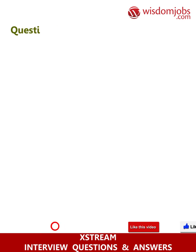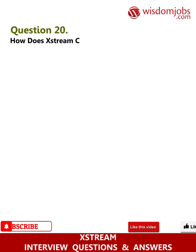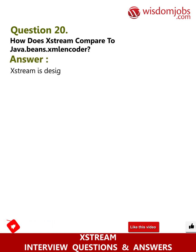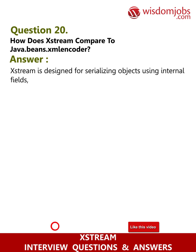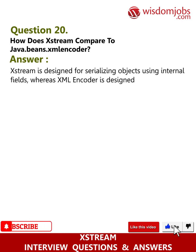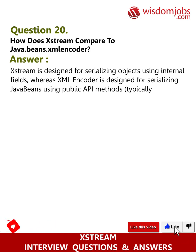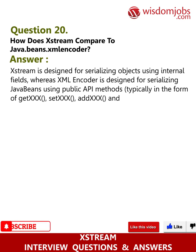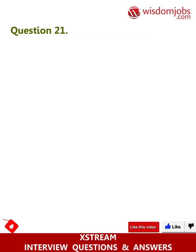Question 20: How does XStream compare to java.beans.XMLEncoder? Answer: XStream is designed for serializing objects using internal fields, whereas XMLEncoder is designed for serializing Java Beans using public API methods — typically in the form of getXxx(), setXxx(), addXxx(), and removeXxx() methods.